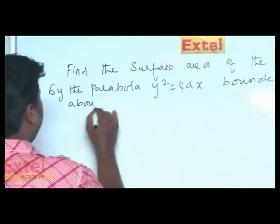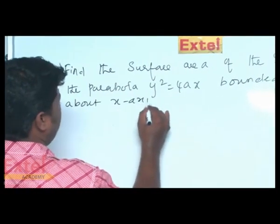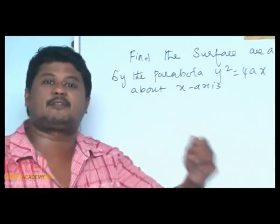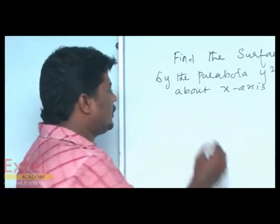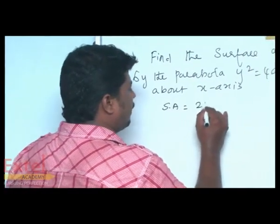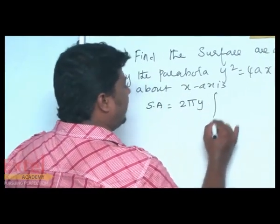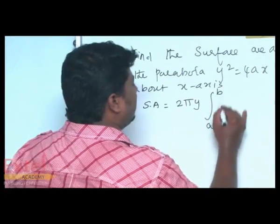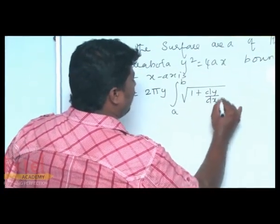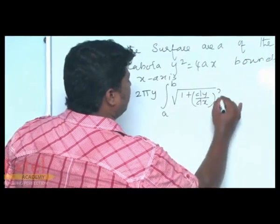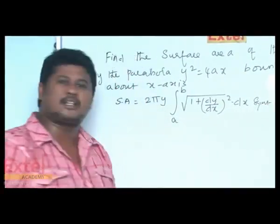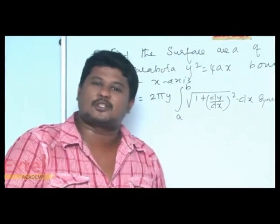The solid is revolved about the x-axis. The formula to find the surface area of a solid is: surface area equals 2π y, integral from a to b, square root of 1 plus (dy/dx) squared, into dx square units.